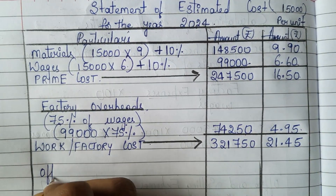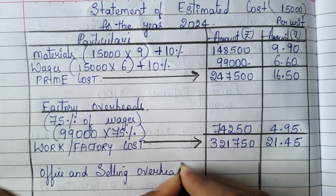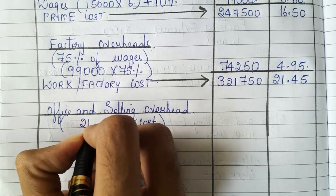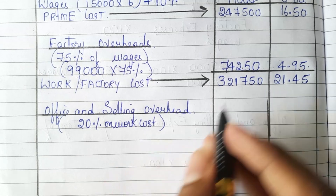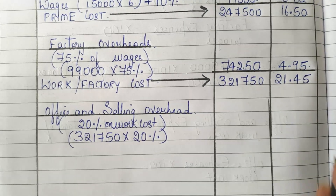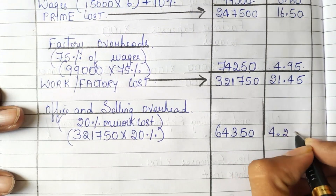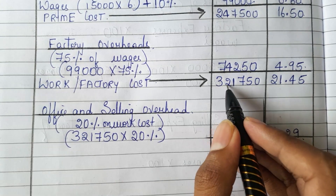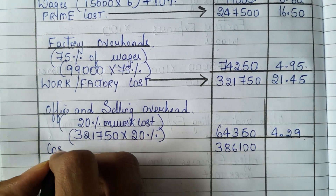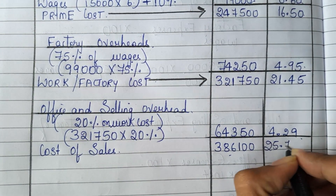Next, for this we need to add office and selling overhead. They have told it should be on the basis of work cost, and we found it should be 20% of work cost. The work cost here is 3,21,750, so 20% of 3,21,750 is 64,350. Dividing by 15,000 gives 4.29 rupees per unit. Adding 3,21,750 and 64,350 gives 3,86,100, which is the cost of sales — 25.74 rupees per unit.